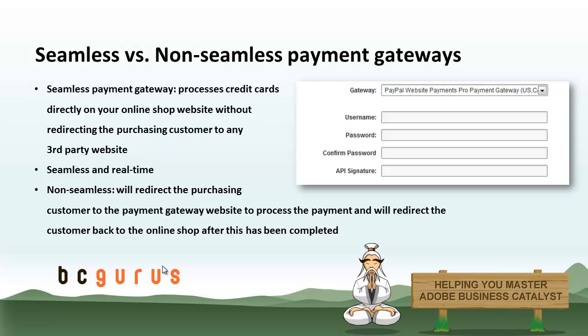So what is a seamless and what is a non-seamless payment gateway? A seamless payment gateway is one that processes credit cards directly on your online shop website without redirecting the purchasing customer to any third party website — the whole transaction is seamless and takes place in real time. On the other hand, a non-seamless payment gateway such as PayPal will redirect the purchasing customer to the PayPal website to process the payment and then redirect the customer back to the online shop after this has been completed.